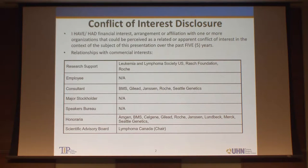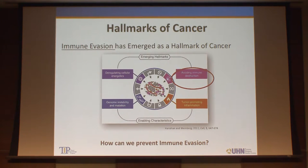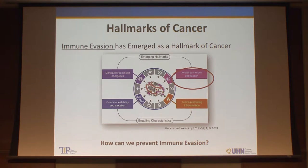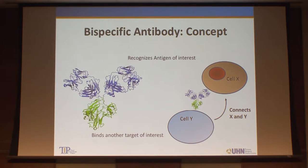I have received honoraria and previously some research funding from them. A good starting point is to look at the revised update of the hallmarks of cancer, where immune evasion has certainly emerged as one of the key hallmarks. One of the questions is how can we potentially prevent this? One example is to look at a bispecific antibody.